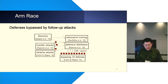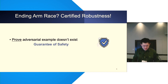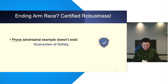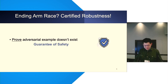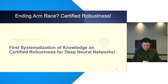Surrounding this issue, in the last few years, we can see there's an arms race between defenders and attackers, where existing defenses are usually bypassed by subsequent attacks. One possible way to end this arms race is to achieve certified robustness, where we can prove that adversarial examples don't exist. In this SOC, we provide the first systematization of knowledge on certified robustness for deep neural networks.